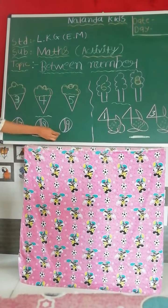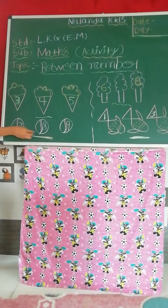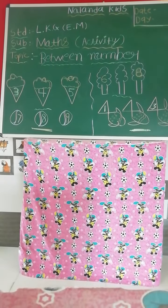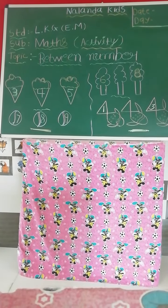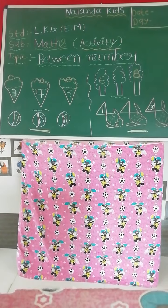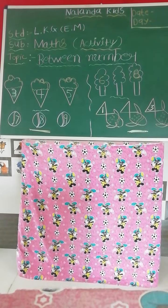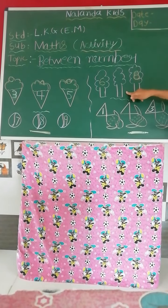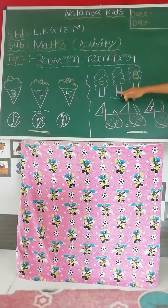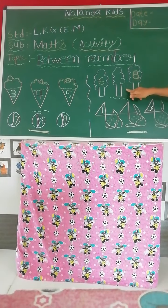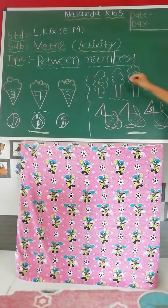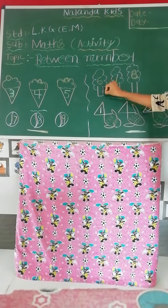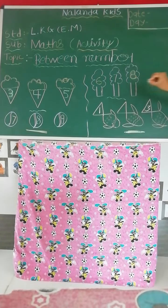7, 8, 9. Next number is 6 blank 8. So what comes after 6? 6 te baad kosa number aata hai? 7! So 6, 7, 8.